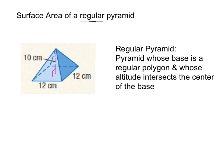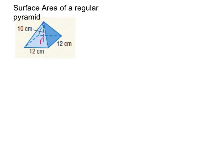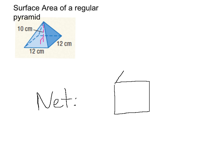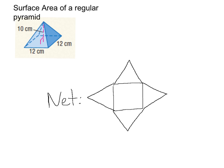So now let's talk about how we would actually find the surface area of a pyramid. To find the surface area of our regular pyramid, we're going to start by drawing the net. For the net of a pyramid, I like to start with my base, which in this case is a square. Then I just fold back each of the triangular faces. Since this is a regular pyramid, the triangular faces should be congruent.